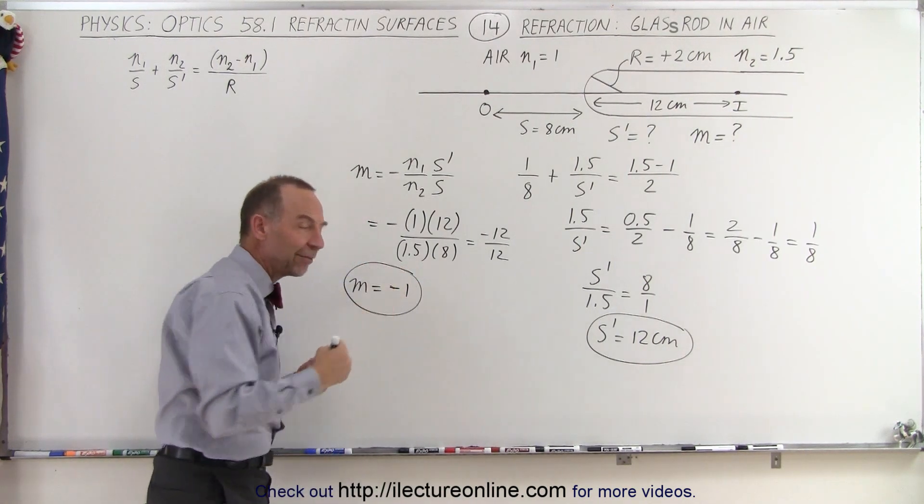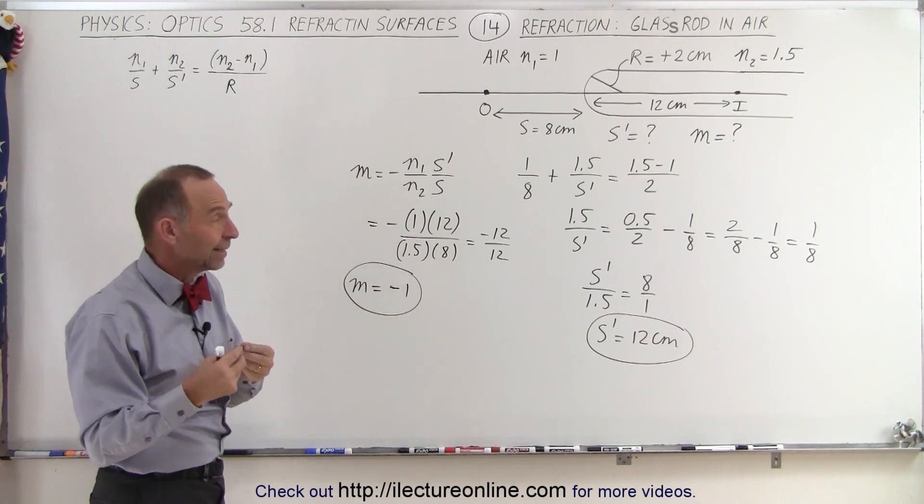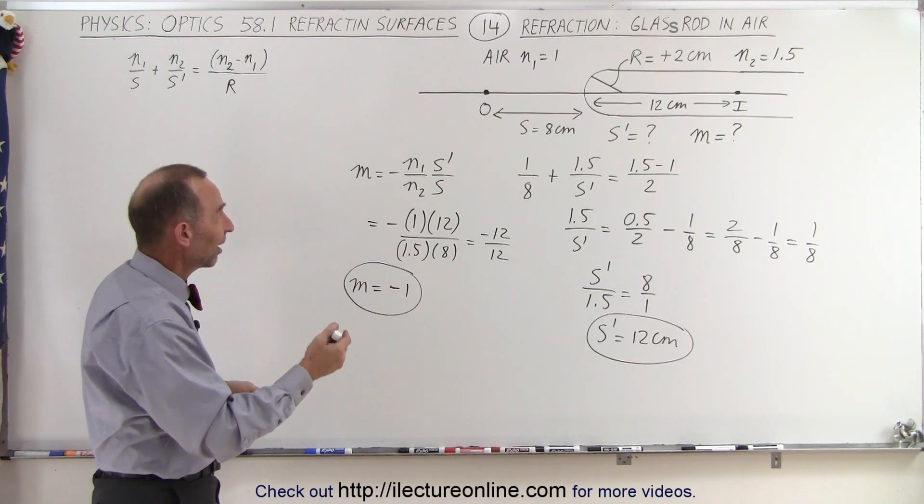Minus simply means that we have the inverse, that it's upside down, and 1 means that the size of the image is exactly the same as the size of the object,